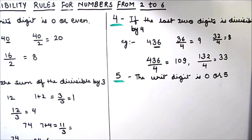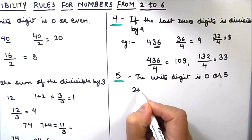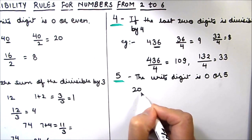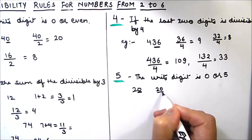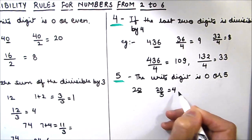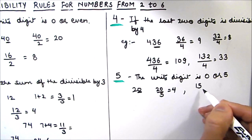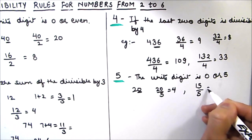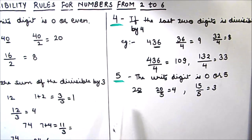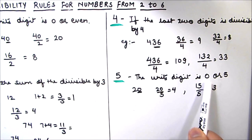Now let's check the divisibility rule for number 5. It is very easy: for a number to be divisible by 5, the unit's digit should be 5 or 0. Let's take the number 20 — the unit's digit is 0, so 20 is divisible by 5. If the unit's digit is 5, let's take 15 — 15 is also divisible by 5. So if the last digit is 0 or 5, the number is divisible by 5.